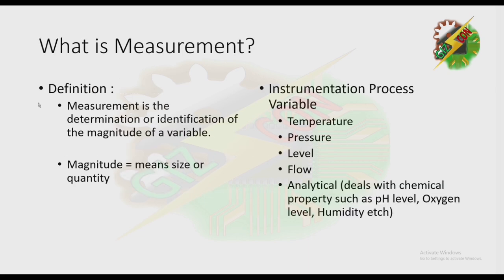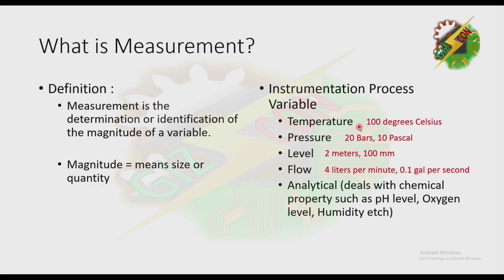Now let's discuss what is Measurement. By definition, Measurement is the determination or identification of the magnitude of a variable. In Instrumentation, we have five basic variables: temperature, pressure, level, flow, or analytical. Magnitude means the size or the quantity. For example, in temperature we have 100 degrees Celsius — 100 is the magnitude, and degrees Celsius is the unit. For pressure, we have 20 bars — 20 is the magnitude, and bars is the unit.